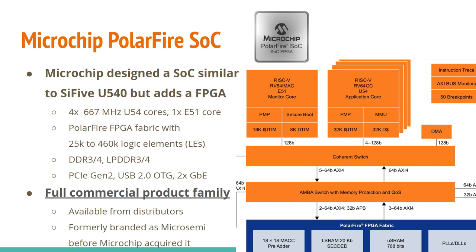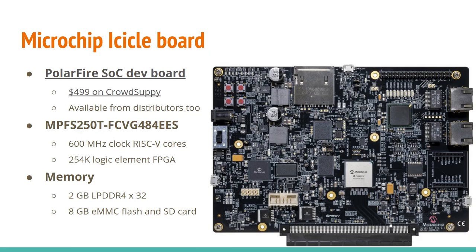Microchip has the PolarFire SoC, which is similar to the SiFive FU540 but adds an FPGA. We have four U54 cores from SiFive along with the FPGA fabric, which can make for some pretty interesting systems. The part is intended for full commercial availability from distributors, so you can build your own boards with it. Microchip produced the Icicle board as the reference dev kit — it's half the price of the Unleashed and available from distributors, with 2 gigabytes of memory and built-in eMMC flash, though the integrated FPGA does push the price higher than some may want.